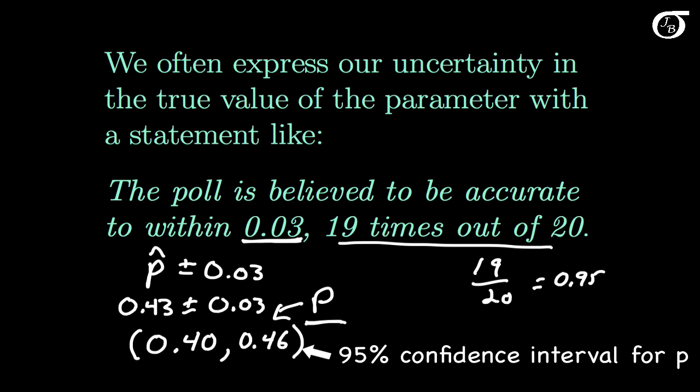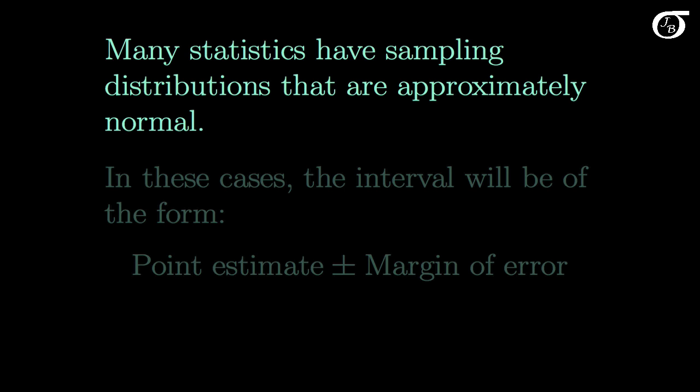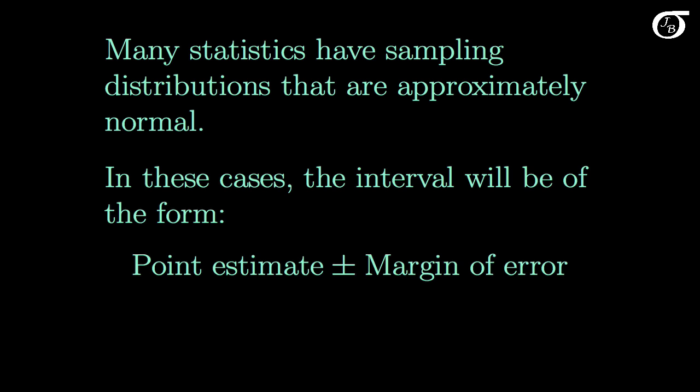And as we work through the concepts in a little bit greater detail, we're going to learn why we can say within 0.03 and 0.95. Many statistics have sampling distributions that are approximately normal. In large part this is due to the central limit theorem. But in these cases the interval will be of the form point estimate plus and minus the margin of error. And we're going to use mathematical arguments to come up with the appropriate margin of error in these different situations.